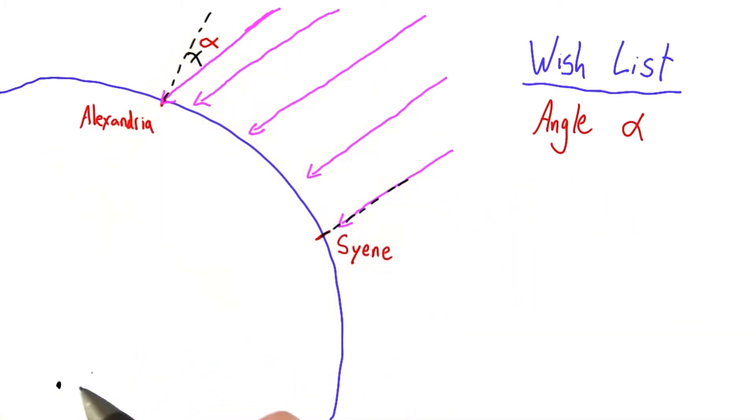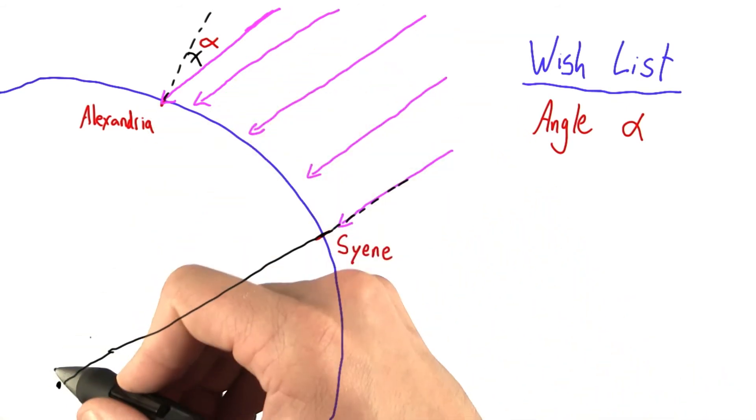And since a circle is involved here, or a sphere, but we're only looking at a circular cross section of it, drawing lines from the center is usually a good idea. So I'm going to draw a line from the center to Siena, and from the center to Alexandria.